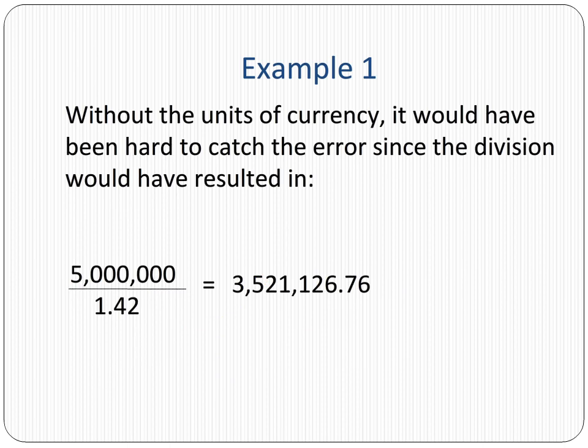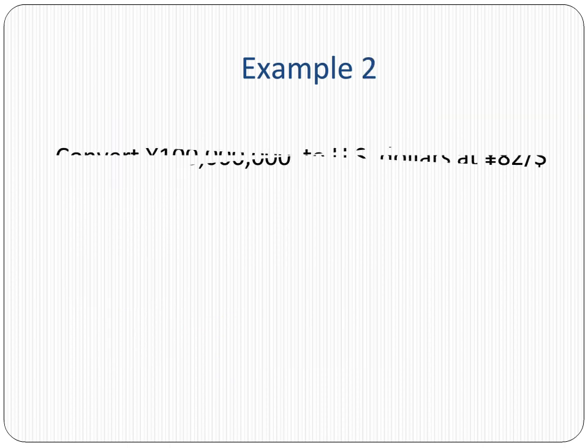In the next example, our goal is to convert a yen amount to the dollar amount at the exchange rate of 82 yen per dollar. We check to see where the yen appears in the code that is provided.